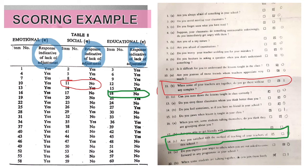Likewise, we score all items. The items in the emotional domain are 1, 4, 7, 10, 13, and so on — total these for the emotional domain score. The items for the social domain are 2, 5, 8, 11, 14, and so on — total these for the social domain score. The educational domain items are 3, 6, 9, 12, 15, and so on. Once you have scores for all three domains, total them to get the overall adjustment score.